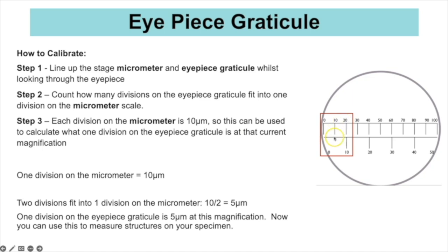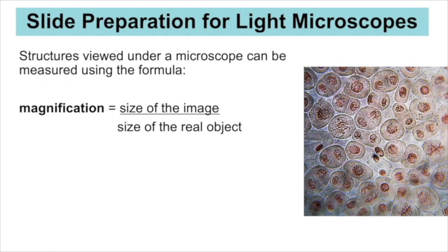If one stage micrometer division is worth 10 micrometres and two eyepiece graticule divisions fit into that, then 10 divided by 2 = 5. So at this magnification, one division on the eyepiece graticule is worth 5 micrometres. You can then measure your specimen to work out its actual size.